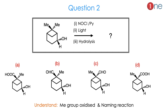Then question number 2. The starting material is a 6-membered ring system with a bridged carbon inside. One methyl group is above and one is below, and an OH is also at the third position. The reagents are NOCl and pyridine, then light, and finally hydrolysis. From the four choices, one methyl group is oxidized to either CHO or COOH, so you can understand that one methyl group is oxidized and a named reaction is involved.